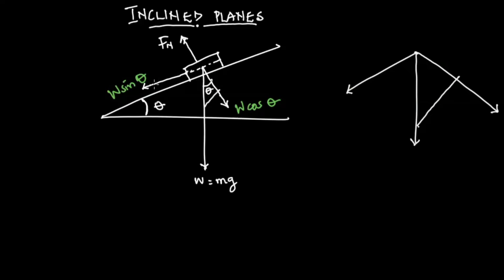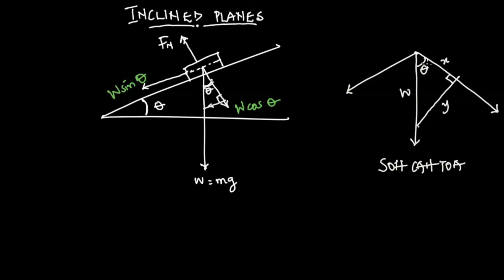We draw a line parallel to this line such that we form a right-angle triangle. We have our angle theta, and here this is our weight — let's call it w. Let's call the side along the plane x and the side perpendicular y. From SOHCAHTOA: sinθ = opposite over hypotenuse, cosθ = adjacent over hypotenuse, tanθ = opposite over adjacent. The side facing the angle is the opposite, so sinθ = y over w (the hypotenuse), therefore y = w·sinθ. That is how we get w·sinθ, since this line is parallel to that line.